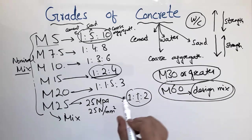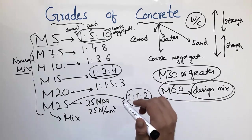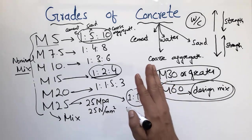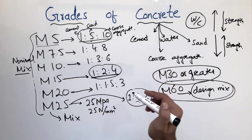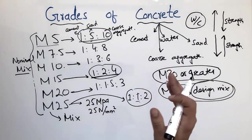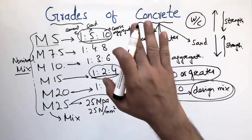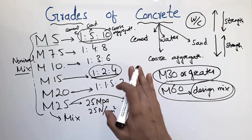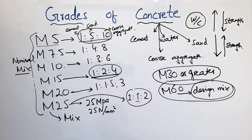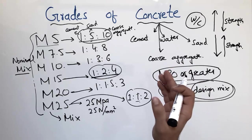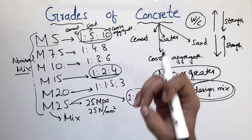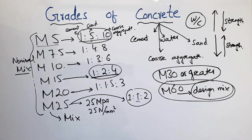One important point: columns and foundations always require high-strength concrete because the whole load is carried by columns and foundations. Beams and slabs usually use lower-strength concrete.